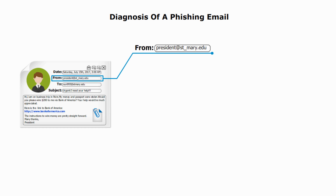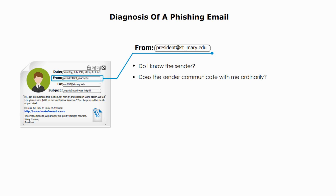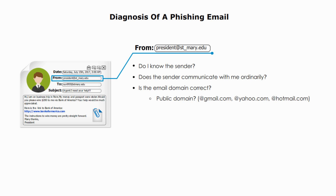About the sender, ask yourself three questions. If all three answers are yes, it's okay to move on. If any answer is no, you should have reasons to be suspicious. 1. Do I know the sender? Yes, I do. He is the president of my university, but many phishing emails use important people to get attention. Every single employee would read any email from the president of a university or CEO of a company as soon as they get it. 2. Does the sender communicate with me ordinarily? The answer is no. 3. Is the email domain correct? The sender used a public domain, gmail.com. I can tell it is phishing just because he is using a public domain.